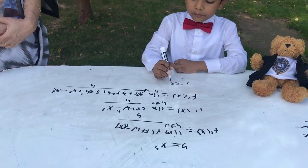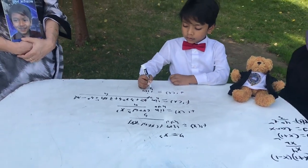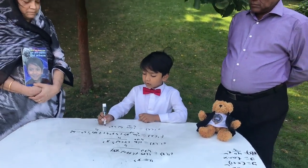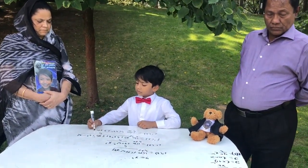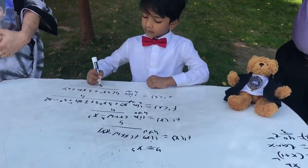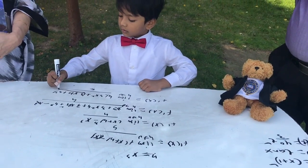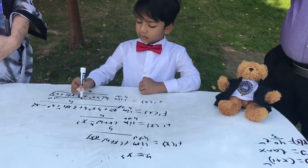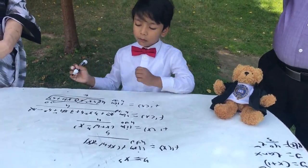f prime of x equals the limit as h goes to 0 of 3x squared plus 3xh plus h squared, over h. Factor out and cancel h. Taking the limit as h goes to 0, our final answer is 3x squared.